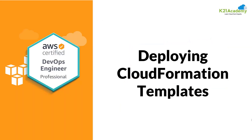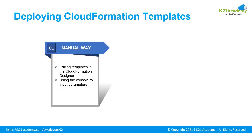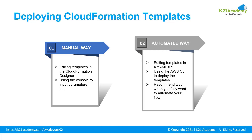Now let's see how we can deploy CloudFormation templates — either manually or in an automated way. In the manual way, you edit templates in the CloudFormation designer and use the console to input parameters. In the automated way, you edit templates in a YAML file and use the AWS CLI to deploy them. In general, it is recommended to use the automated way when you want to fully automate your flow.